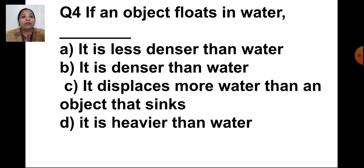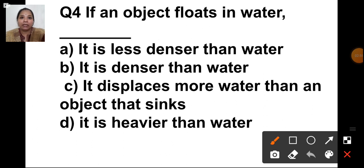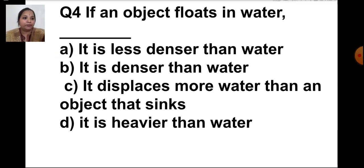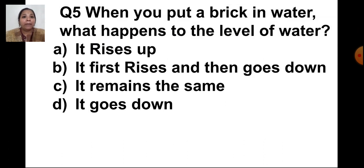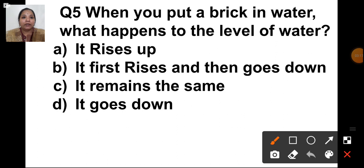The next question: if an object floats in water — options are: it is less dense than water, it is denser than water, it displaces more water than an object that sinks, it is heavier than water. The answer is A, it is less dense than water. Next, when you put a brick in water, what happens to the level of water? Options: it rises up, it first rises then goes down, it remains the same, it goes down. The answer is A — when you put a brick in water, the water level rises up.